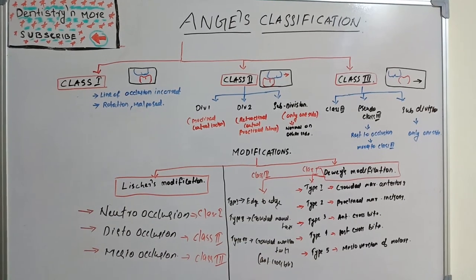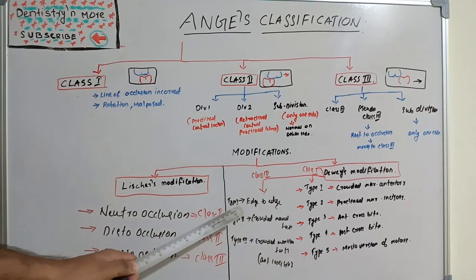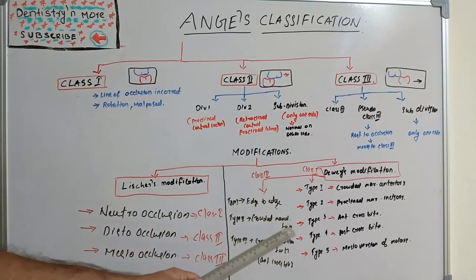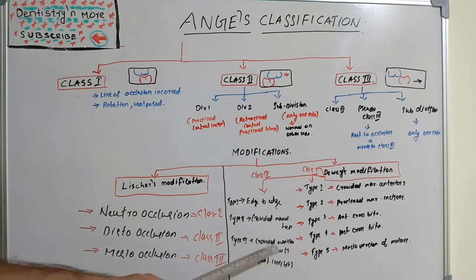For Class 3 in Dewey's modification: Type 1 is edge-to-edge (H2H) occlusion, Type 2 is crowded mandibular teeth, and Type 3 is crowded maxillary teeth — where the maxillary size will be lesser and there will be anterior crossbite.